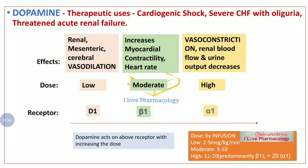The low dose is 2 to 5 micrograms per kg per minute. The moderate dose is 5 to 10 micrograms per kg per minute. The high dose is 11 to 20 micrograms per kg per minute, which predominantly acts on beta-1 receptors. At concentrations greater than 20 micrograms per kg per minute, dopamine mainly acts on alpha-1 receptors.